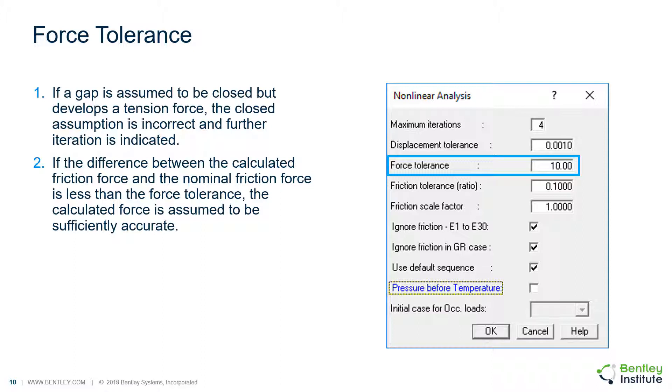However, if the tensile force is less than the force tolerance, the error is ignored. That is, it is assumed that the tensile force is so small that it is negligible and no further iteration is needed.